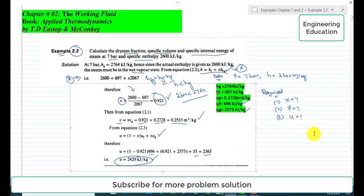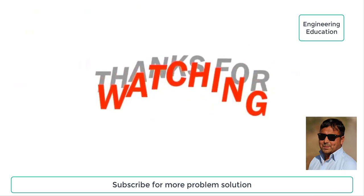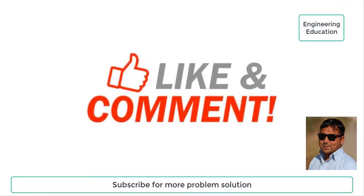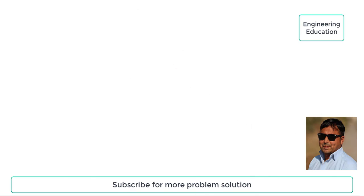These are the required values of dryness fraction, specific volume, and specific internal energy. This is the overall discussion of Example 2.2. In the next video we will discuss Examples 2.3 and 2.4. Thanks for watching. Please like and comment on my videos, and subscribe to my channel to get new videos.